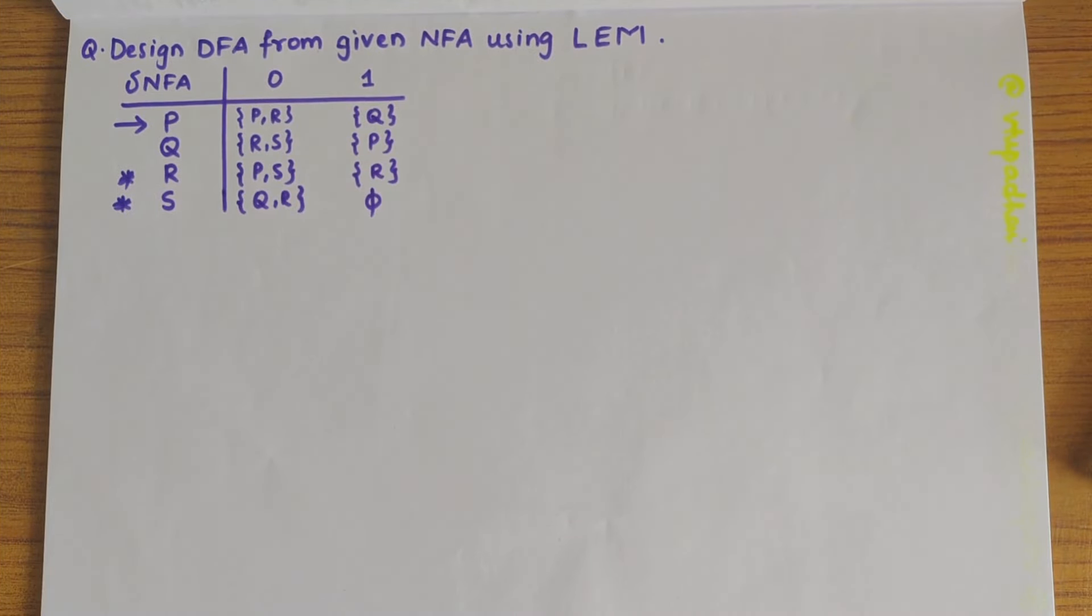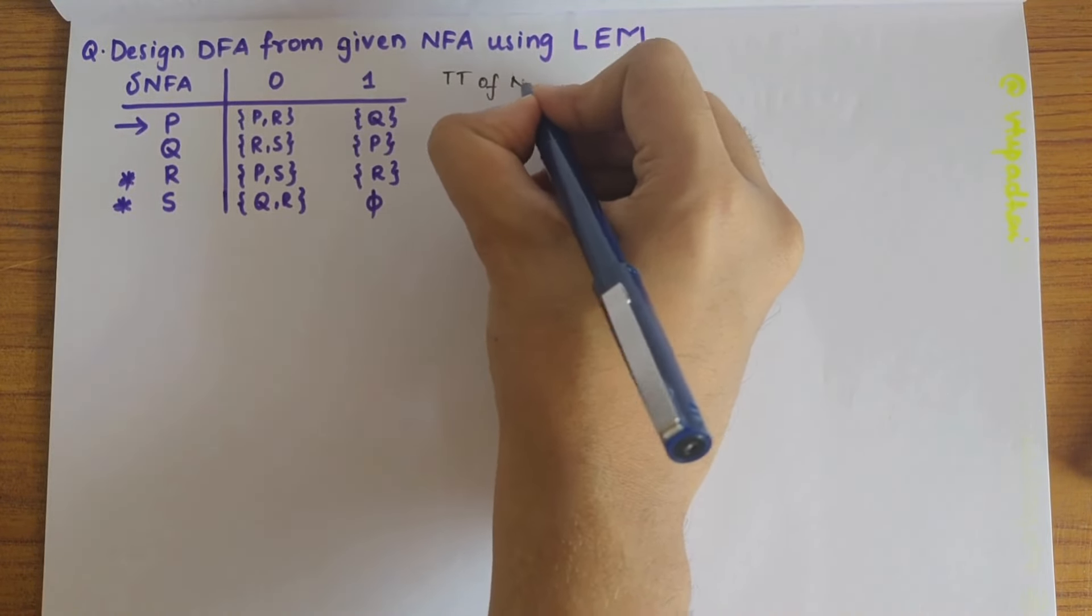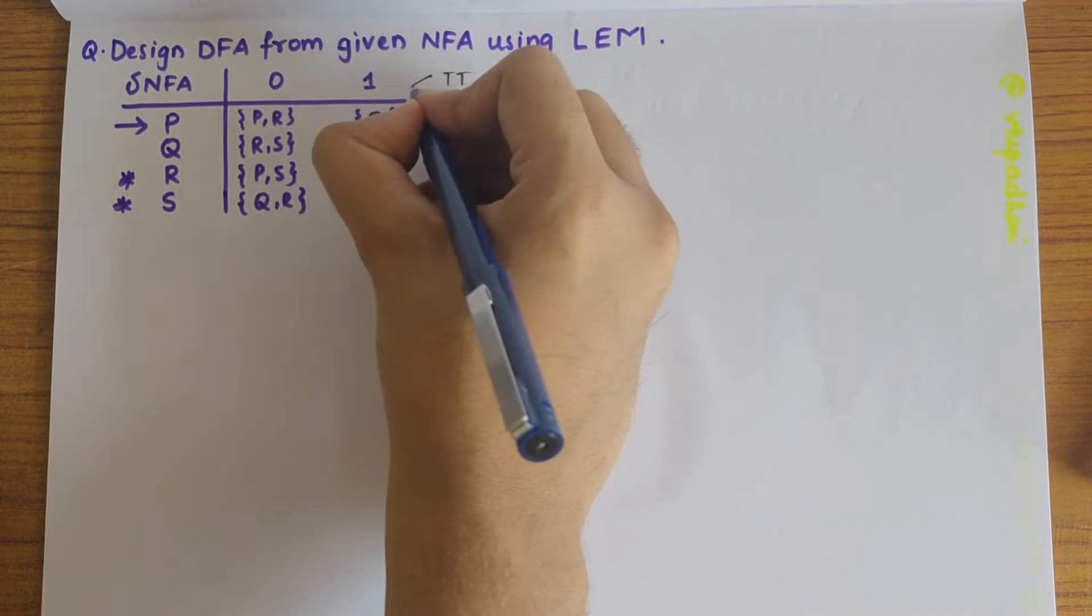In this video, we will be looking into designing a DFA from given NFA using the lazy evaluation method. So firstly, we have given the transition table of NFA here. So our first step is done.